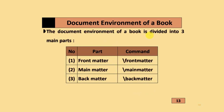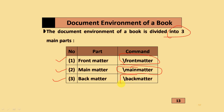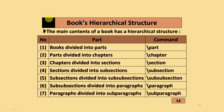Regarding the document environment of a book: the book document environment is divided into three main parts. The first is the front matter, added using the \frontmatter command. The second is the main matter, added using \mainmatter. The third is the back matter, added using \backmatter.